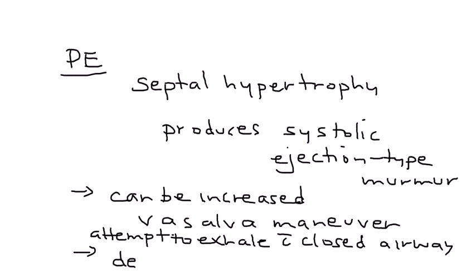This murmur will be decreased with a simple hand grip. And these are important because this will be on a clinical vignette to sort of distinguish. They'll give you scenarios and they'll say, this is what's happening. What will the murmur sound like? Will it be increased? Will it be decreased? Things like that.